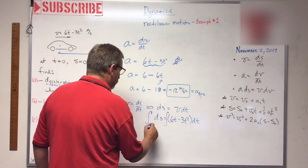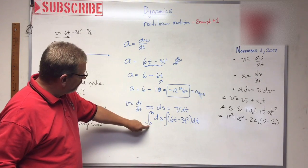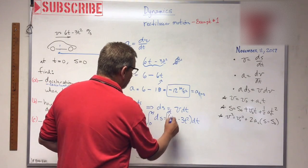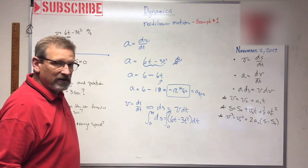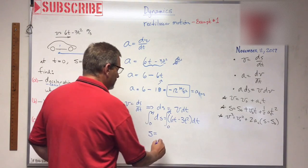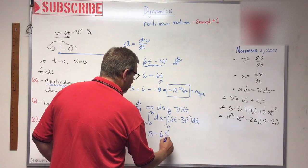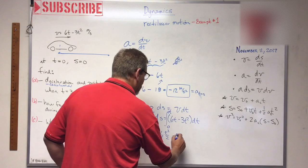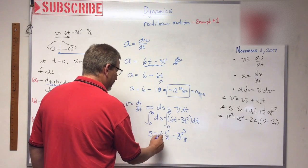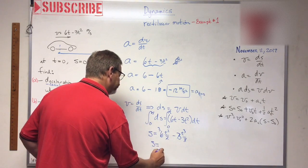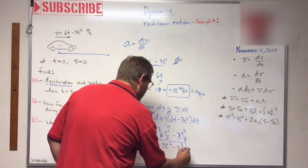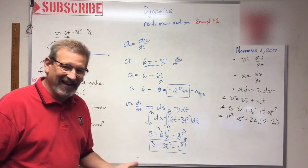Now to get rid of those ds and dt, what do we do? We just integrate both sides. This one goes from 0 to s, or from 0 to the final position, and this one goes with respect to t, 0 to t. Let's see if we can integrate that. Well, this just becomes s, and this over here becomes, we need to integrate that, so that becomes 6t squared over 2 minus 3t cubed over 3. My 3's are going to go away, and I'm going to be left with s equals 3t squared minus t cubed. So now I have an equation for that particle's position at any time.